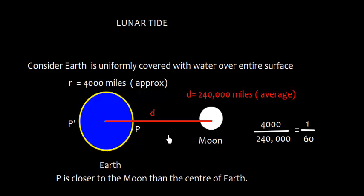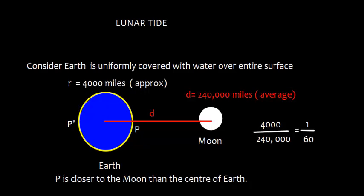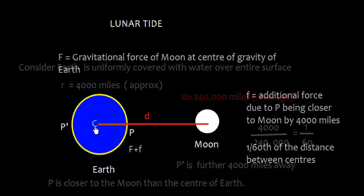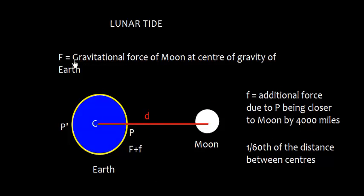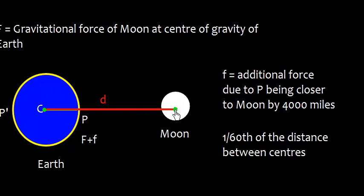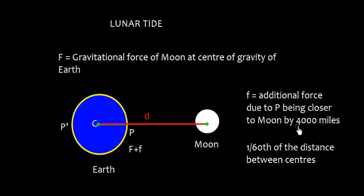So here there are two points. The point P is closer to moon than the center of earth. Similarly, point P' is further 4,000 miles away. And suppose there is F—F is the gravitational force of moon at the center of gravity. So let's talk about this center here and this center here. So there is a force F.